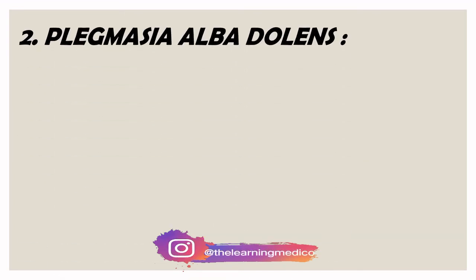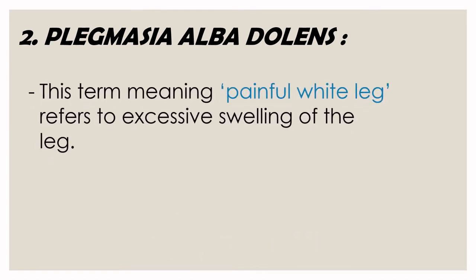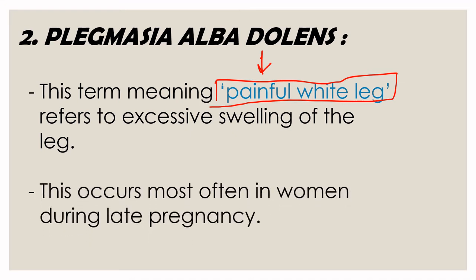Phlegmasia Alba Dolens — this means painful white leg. It is mainly seen in pregnancy. Pregnant women gain a lot of weight, and there is a lot of swelling. It occurs mostly in women during late pregnancy. So when a pregnant woman comes for her routine check-up, we have to watch out for Phlegmasia Alba Dolens.